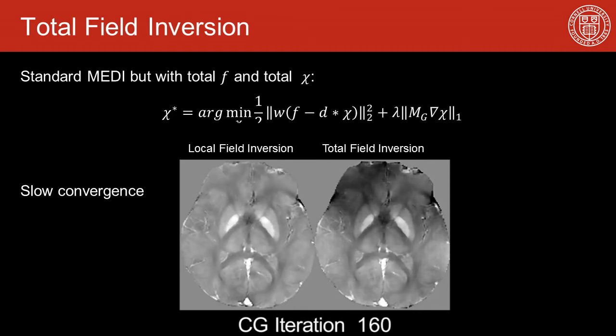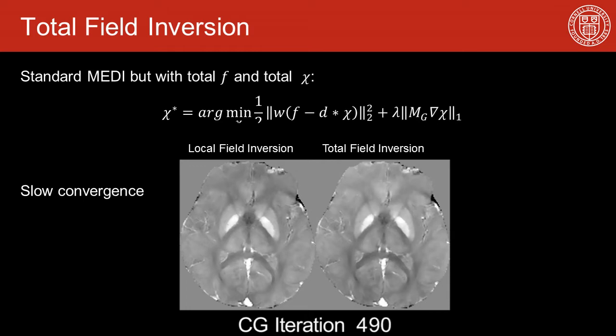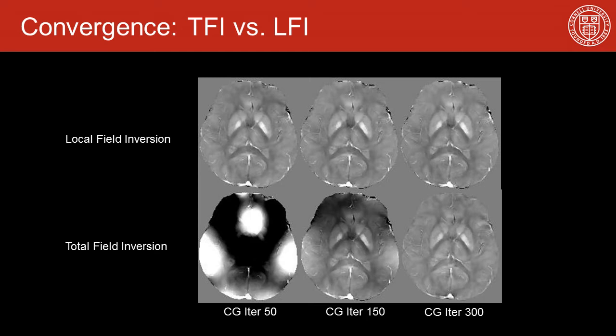We noticed that total field inversion needs far more CG iterations to reach the same solution as the local field inversion. Local field inversion needs only 50 CG iterations to converge, while total field inversion needs at least 300 CG iterations to reach the same solution.